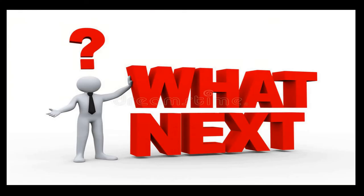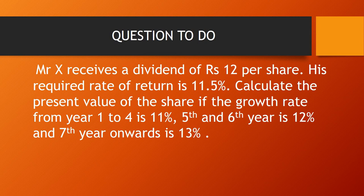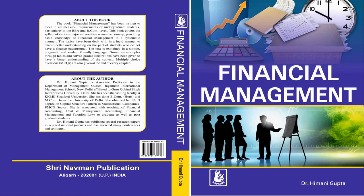Here is a practice question: Mr. X receives a dividend of rupees 12 per share, so the current dividend D0 is 12. The required rate of return is 11.5 percent. Calculate the present value of the share if the growth rate from year one to year four is 11 percent, in year five and six is 12 percent, and from year seven onwards the growth rate becomes 13 percent. For more numericals you can refer to my book on Financial Management. Thank you.